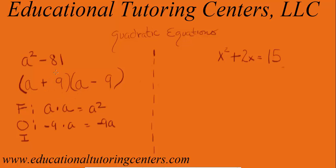And then the inside terms, which are here, and this 9 is positive, and A of course is positive, there's nothing in front of it. So we have 9 times A, which makes a positive 9A.